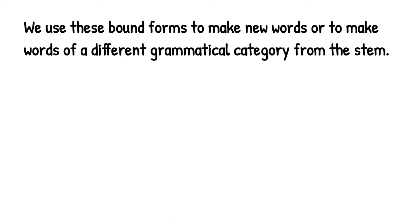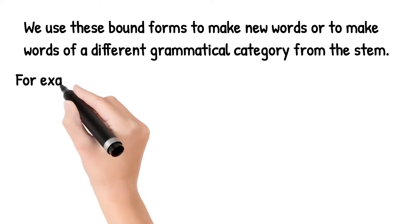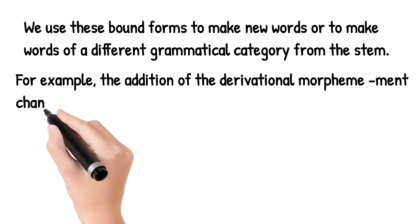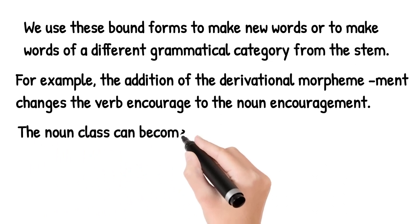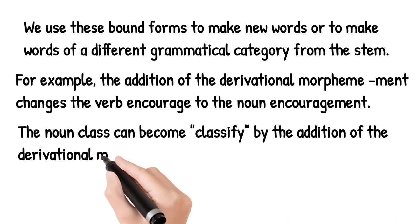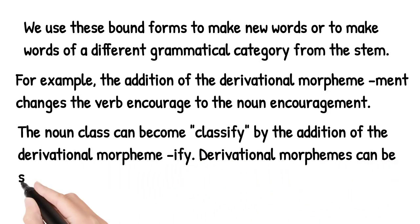Now let's see the examples of derivational morphemes. For example, the addition of the derivational morpheme '-ment' changes the verb 'cover' to the noun 'coverment'. This means a new word is formed, moving from verb to noun. There are many suffixes that change words from verb to noun. Like the noun 'class' — it becomes 'classify' when we add '-ify' at the end. The noun 'class' can become 'classify' by the addition of the derivational morpheme '-ify'. Derivational morphemes can be suffixes like '-ment' and '-ify'.